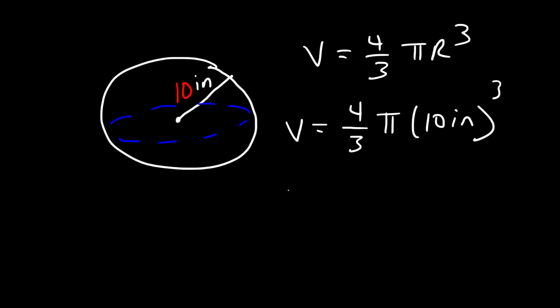The volume of a sphere is 4 thirds pi r cubed. So let's say this is 10 inches. It's going to be 4 over 3 times pi times 10 inches raised to the third power.